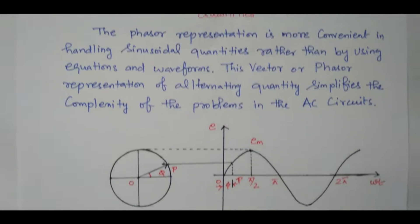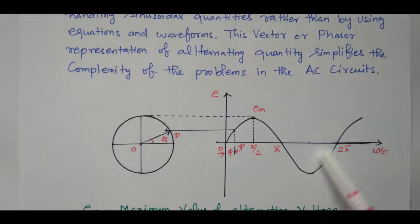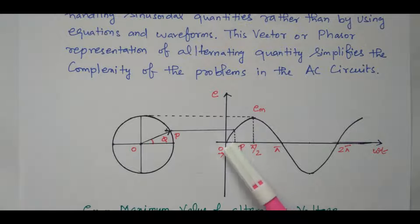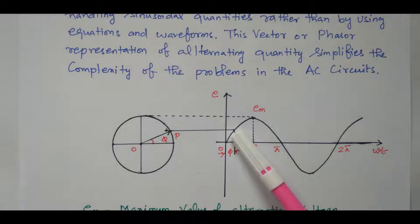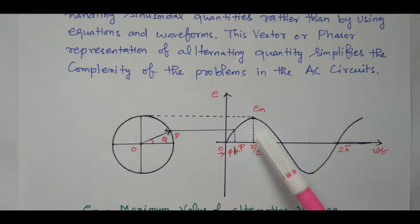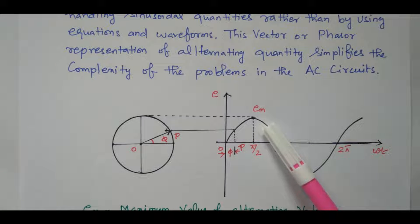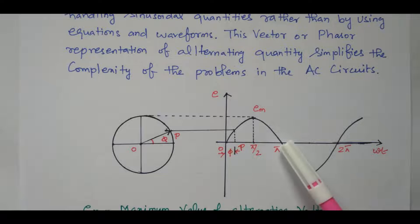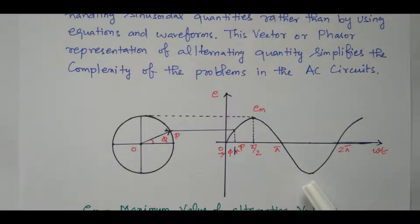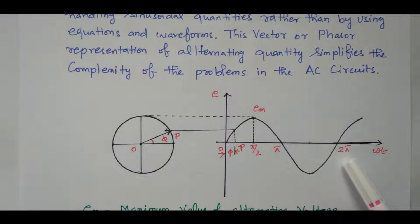Now we will see the phasor diagram. This is a sinusoidal sine wave, taken as a voltage. The sine wave starts at point 0 — at angle 0 it is 0 — then keeps increasing and reaches the maximum value at 90 degrees. Again it decreases, reaches 0 at 180 degrees, again increases in the negative direction and reaches the maximum value at 270 degrees, then decreases and reaches 0 at 360 degrees. So it keeps on alternating.